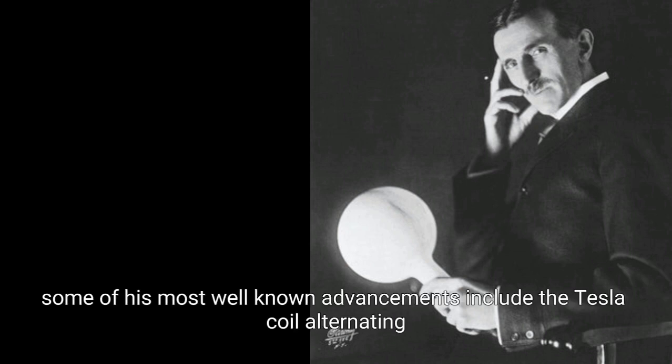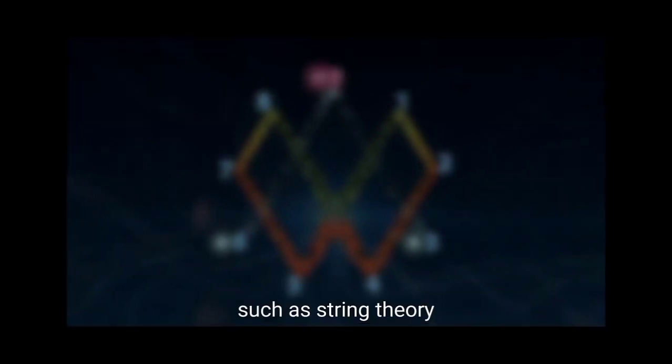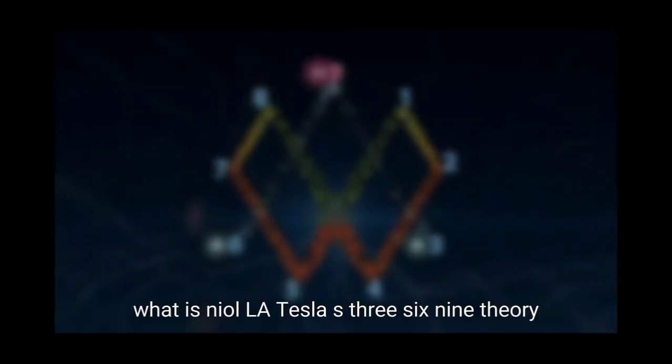Some of his most well-known advancements include the Tesla coil, alternating current, dozens of other devices, and even the basis for mathematical theories that would not be proven until decades later, such as string theory. What is Nikola Tesla's 3, 6, 9 theory?